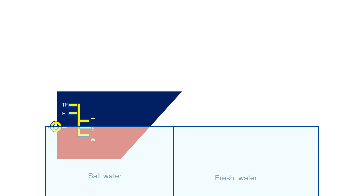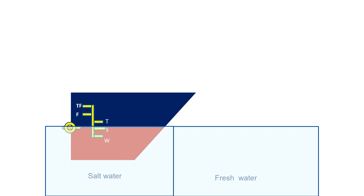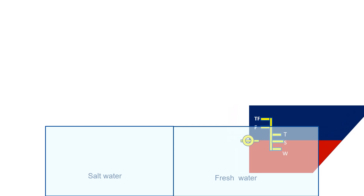In salt water, the ship can be maximum loaded up to the salt water load line, denoted by S. The top of the salt water load line is the maximum to which a ship can be loaded when floating in salt water. But when the ship goes from salt water to fresh water, we keep in mind the fresh water allowance — the ship will sink further by that amount, as shown in the animations. The Plimsoll mark is the circle with a horizontal line crossing through it. From the top of the Plimsoll mark to the top of the freshwater load line is the freshwater allowance.